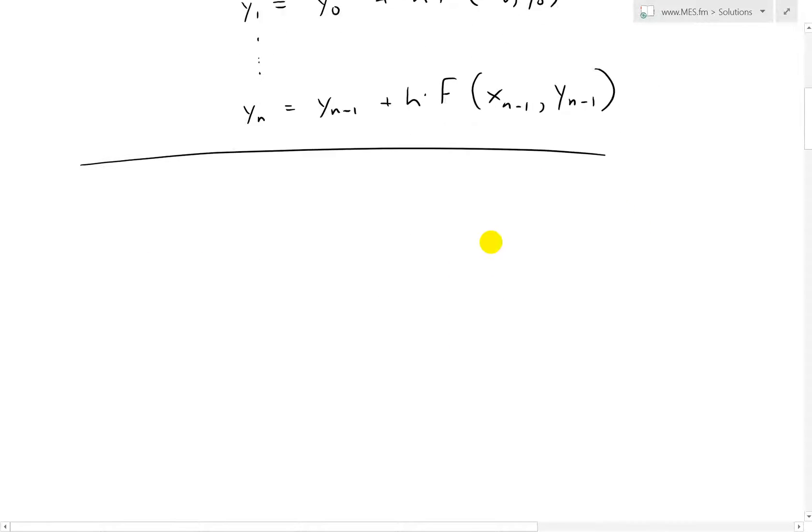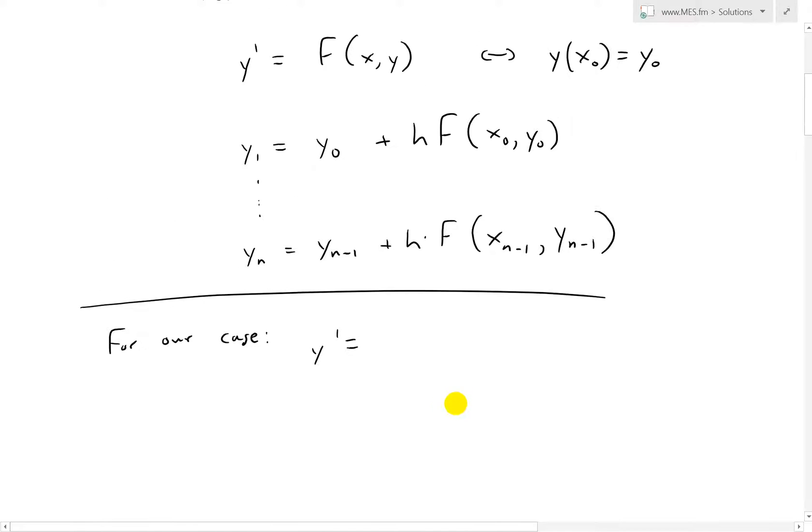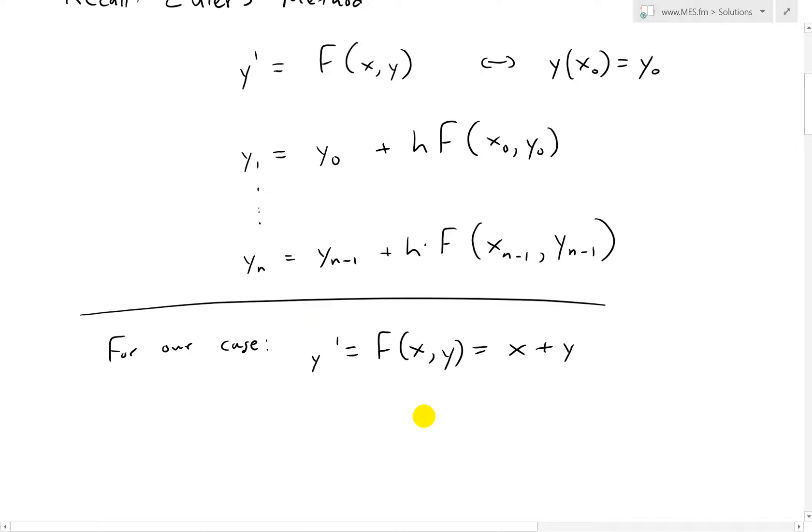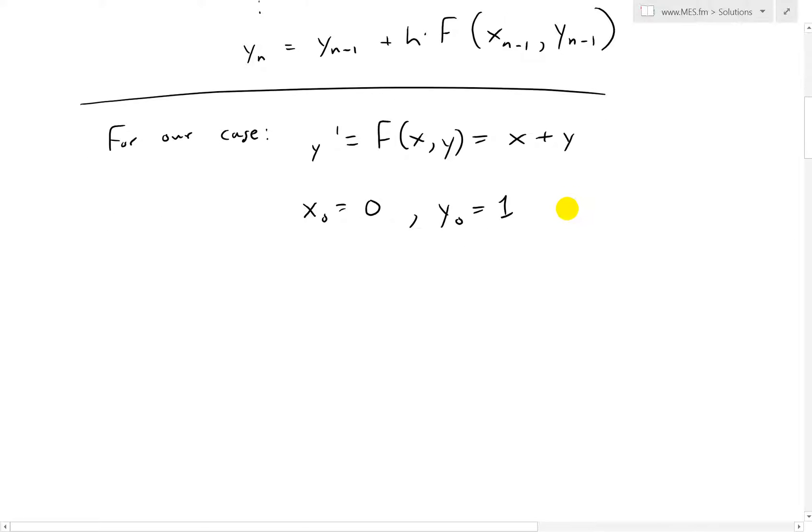Make sure to watch my earlier video to get more in-depth ideas on this topic. So basically, for our case, we could use the same method. Our case right here, we have Y prime is equal to our F of X and Y, which equals to just simply X plus Y. And our initial, our X0 as I stated is equal to 0. And our Y0 is equal to 1. And the step size H is equal to 0.1.